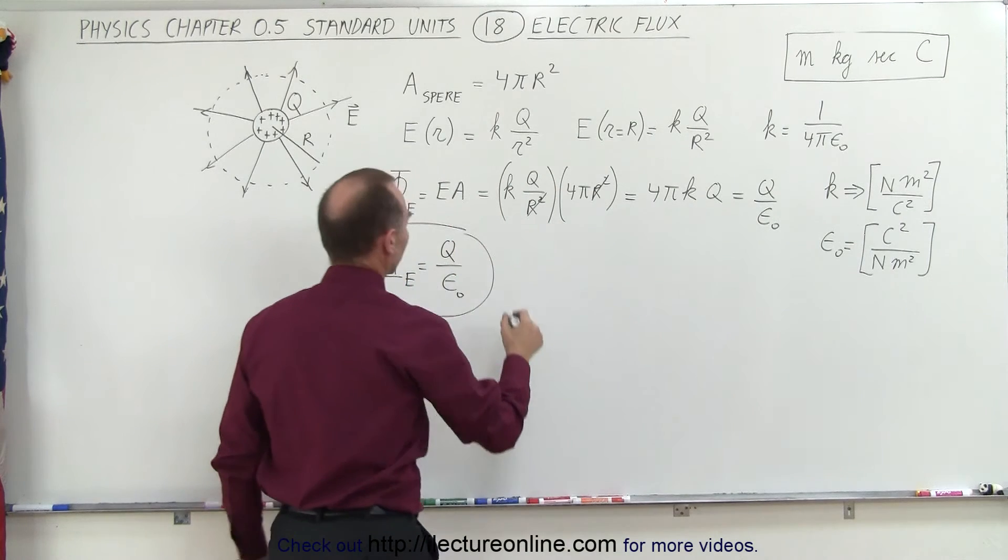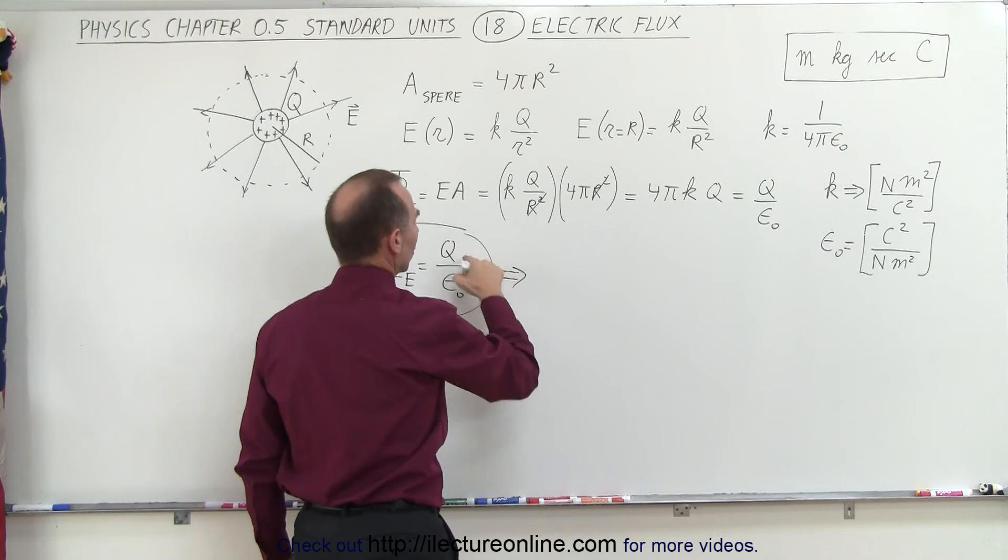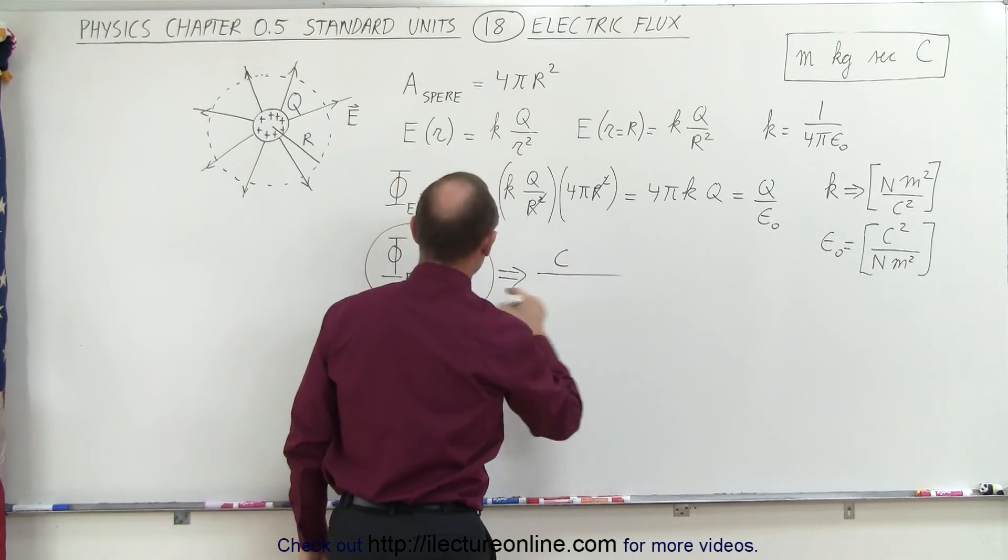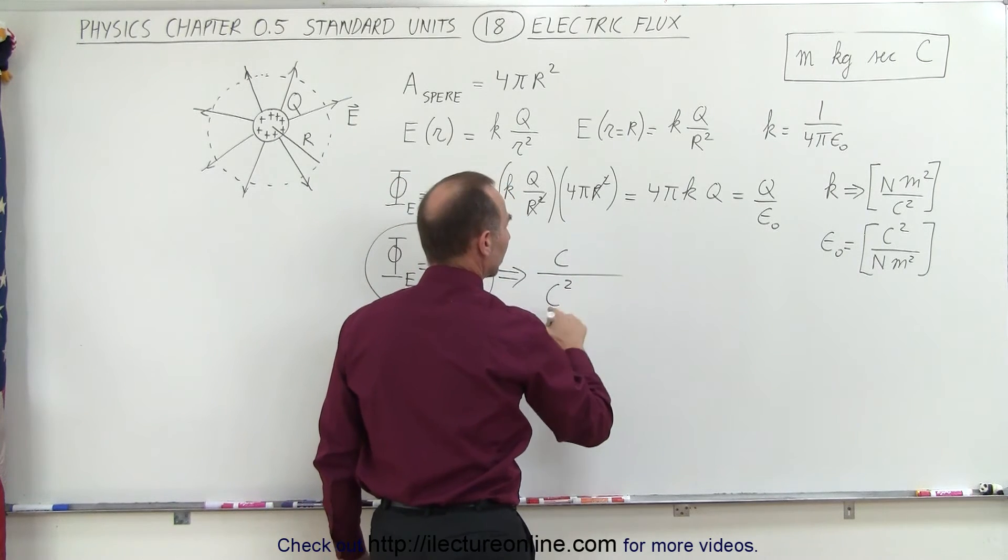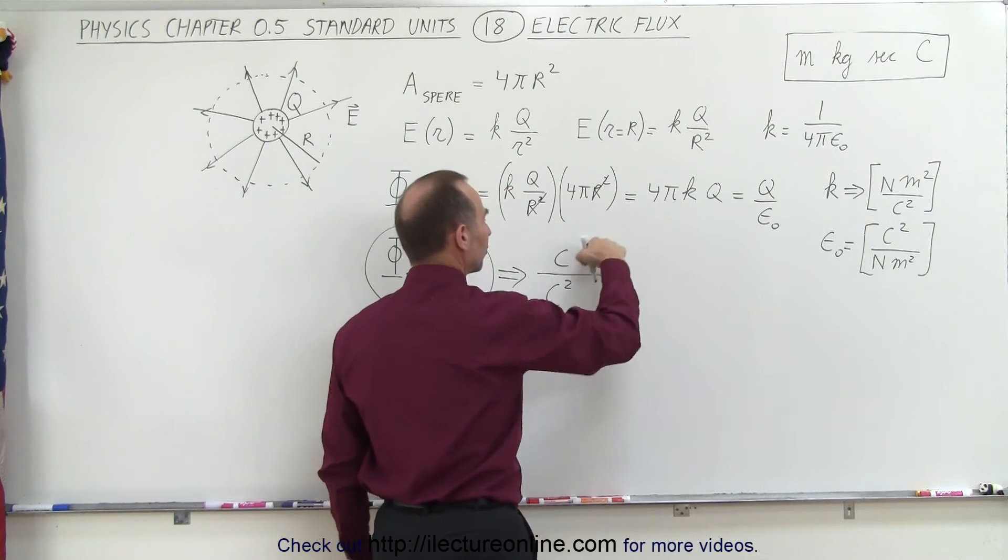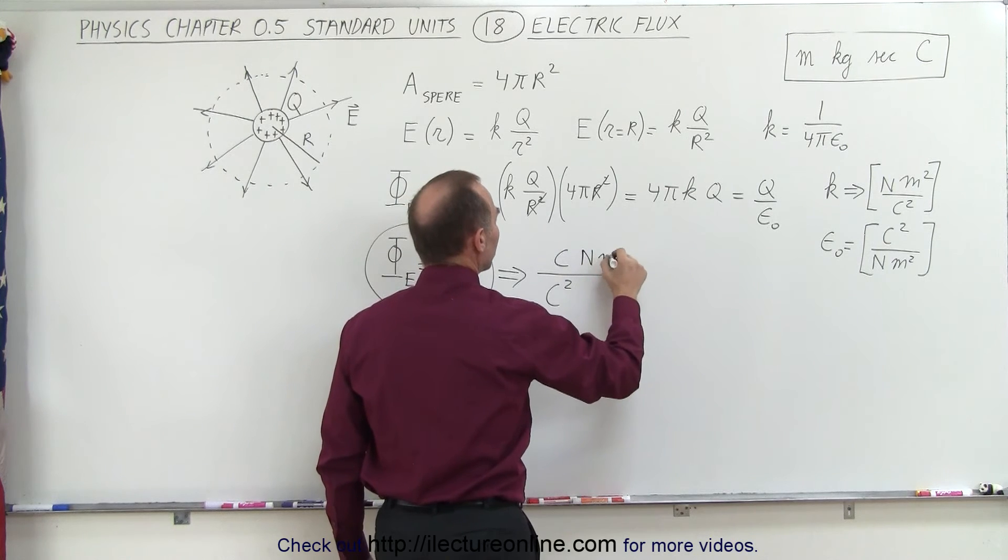And if we plug that in here, we can say then that the units for charge is coulombs, and the unit for epsilon sub nought is coulomb squared divided by Newton meter squared, which goes to the top, Newton meter squared.